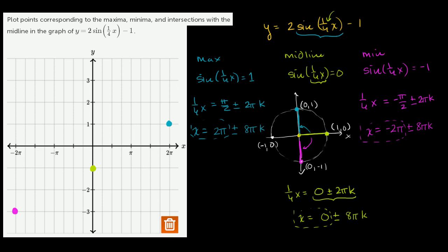So those are our points. They just ask us to graph these points. If we wanted to give a little more texture, we could draw the midline at y equals negative 1, and the function would look something like this — though we're not even plotting a complete period here. Let's go back to the tool and plot these points to make sure we got it right.